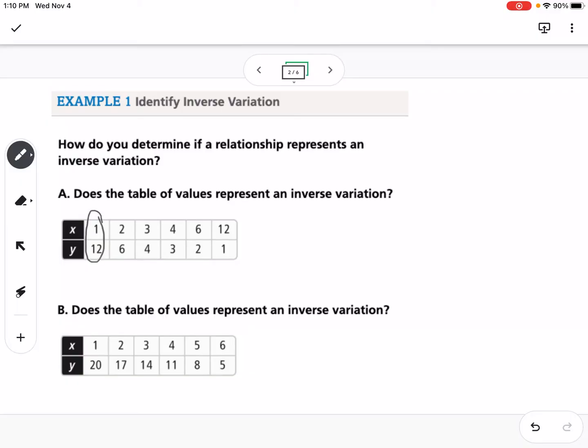So if we look here, 1 times 12 is 12, 2 times 6 is 12, 3 times 4 is 12, 4 times 3 is 12, 6 times 2 is 12, and 12 times 1 is 12. So this is yes, inverse variation.